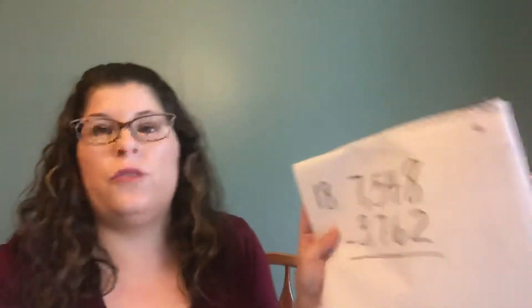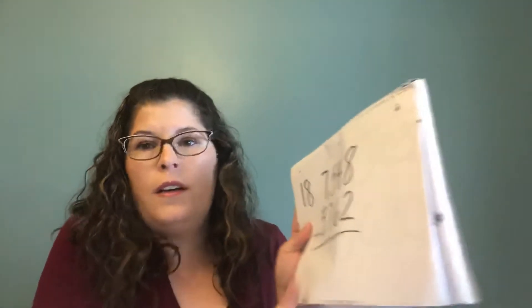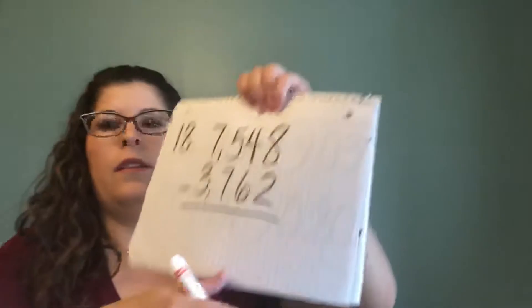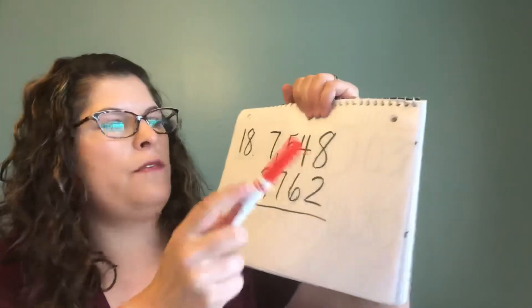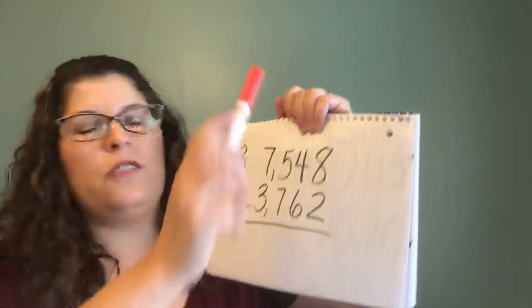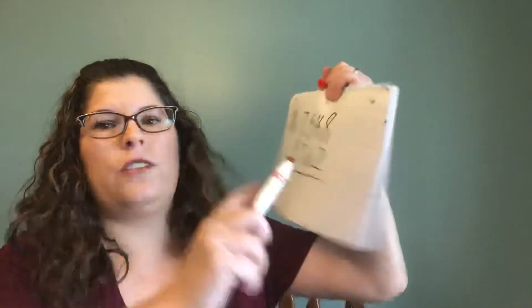Next, we're going to go to the adding and subtracting that you're going to do for problems 18 through 25. We've done this quite a few times. I'm going to just do a quick ungrouping example. So: 7,548 minus 3,762.